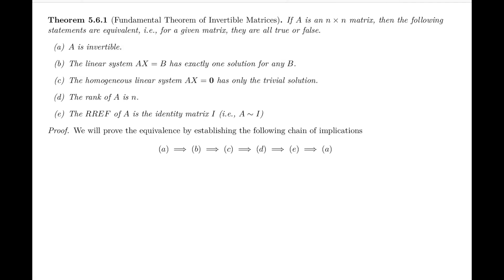If a is an n by n matrix, then the following statements are equivalent — i.e., for a given matrix a, they are all true or all false. Statement (a): the matrix a is invertible. Statement (b): the linear system ax equals b has exactly one solution for every b. Statement (c): the homogeneous linear system ax equals zero has only the trivial solution. Statement (d): the rank of a is n. Statement (e): the reduced row echelon form of a is the identity matrix — in other words, a is equivalent to I.